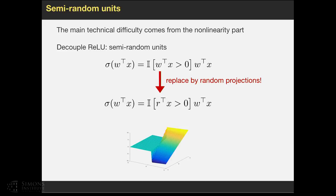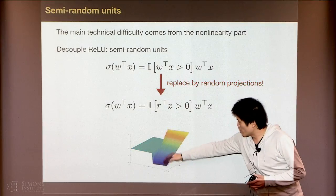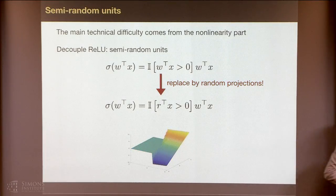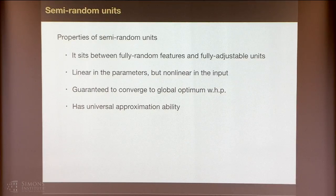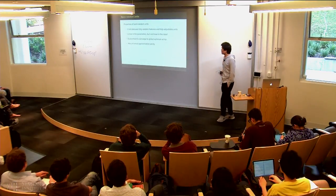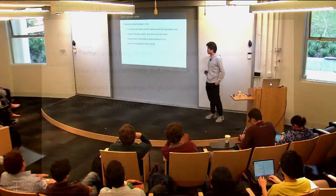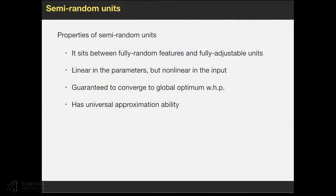In this setting, the D matrix will with high probability satisfy the low weight discrepancy condition. This is a figure of this semi-random unit on the 2D case, where the direction of the threshold is determined by R, and you can adjust this part freely. Here are some properties of this semi-random unit: it sits between the fully random features, which is random projection and then non-linearity used in kernel methods, and the fully adjustable units used in neural networks. We compromise the trade-off between these two kinds of units. It's also linear in the number of parameters but non-linear in the input. According to previous analysis, it's guaranteed to converge to the global optimum with high probability. It also has universal approximation ability.